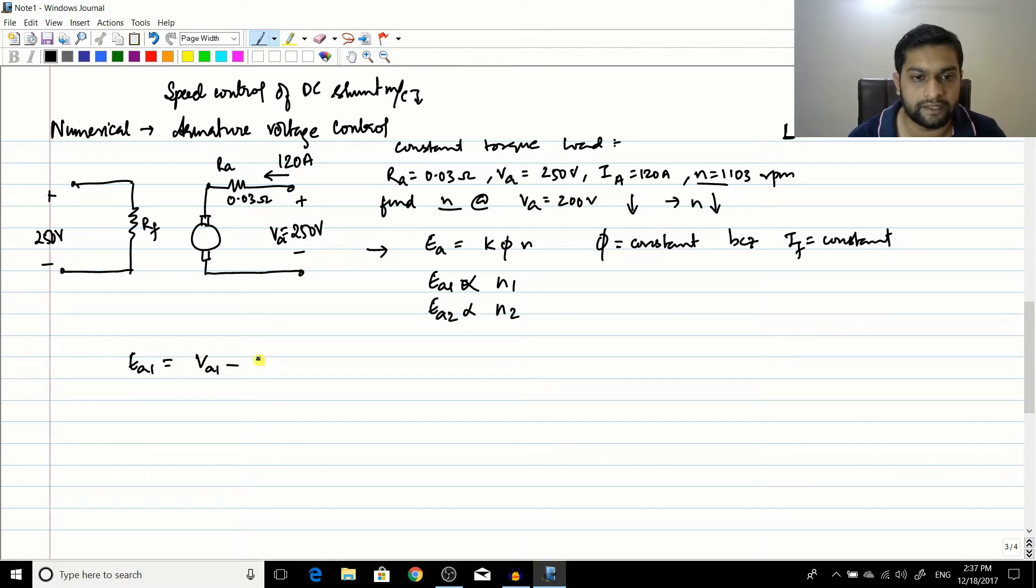VA1 minus IA1 into RA. So VA1 is given as 250 volts - that is the initial condition. It is 250 minus IA1 which is 120 amperes into 0.03 ohms.